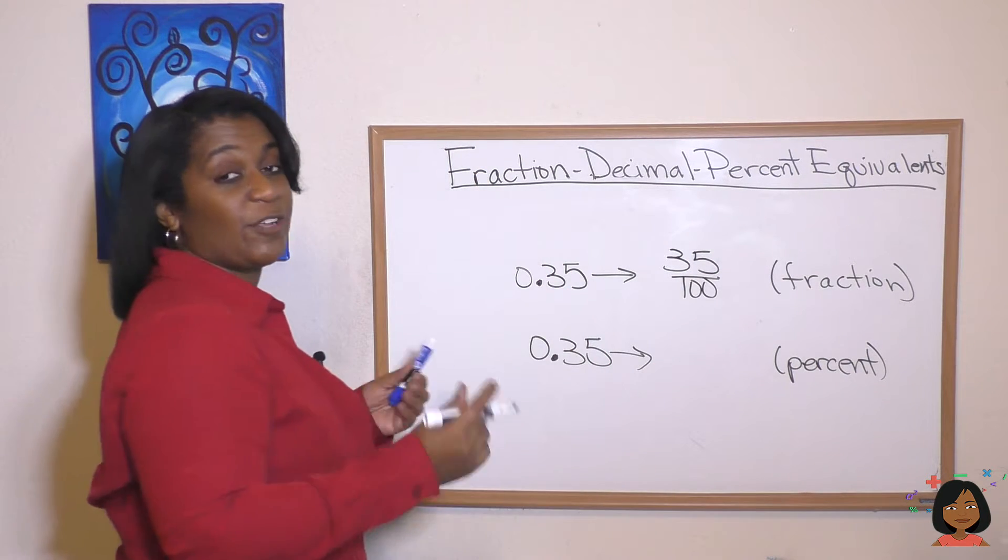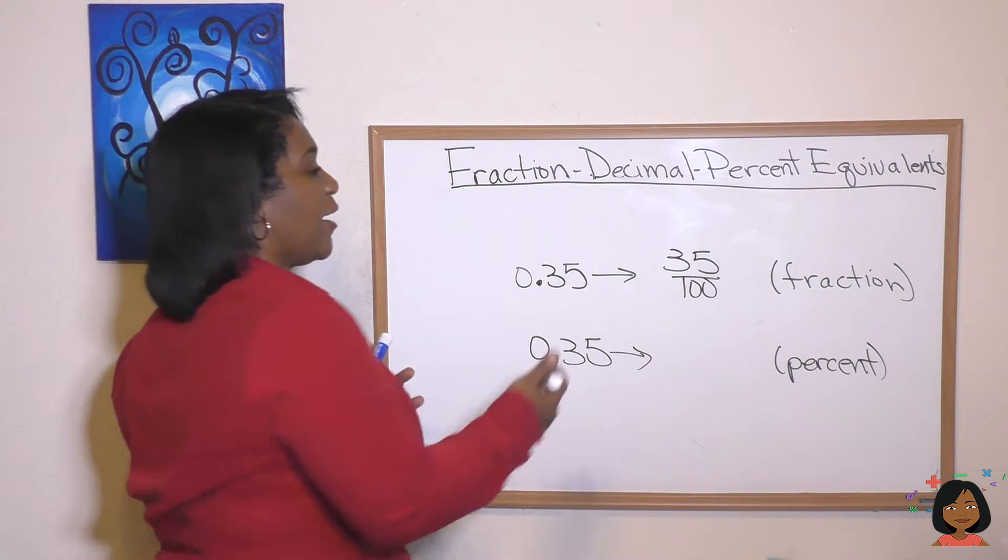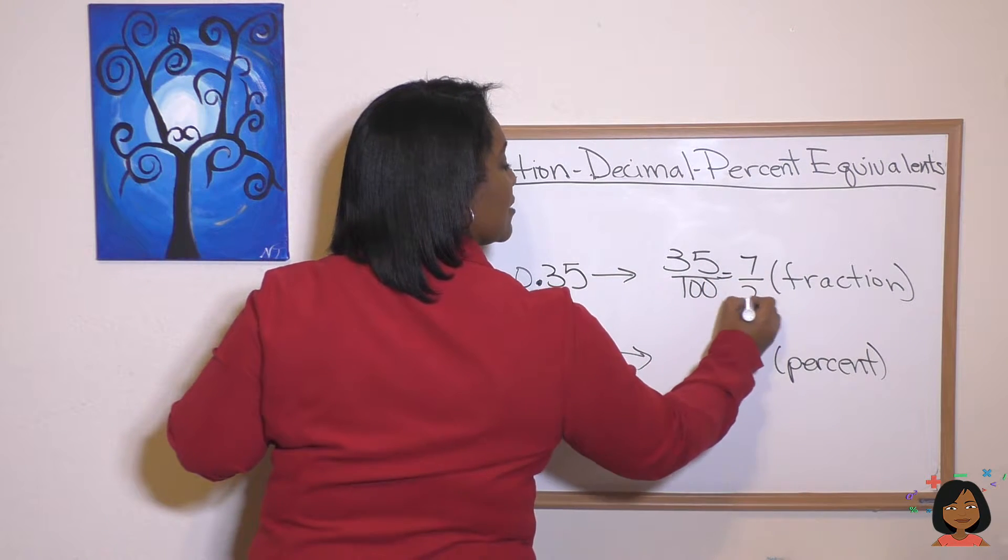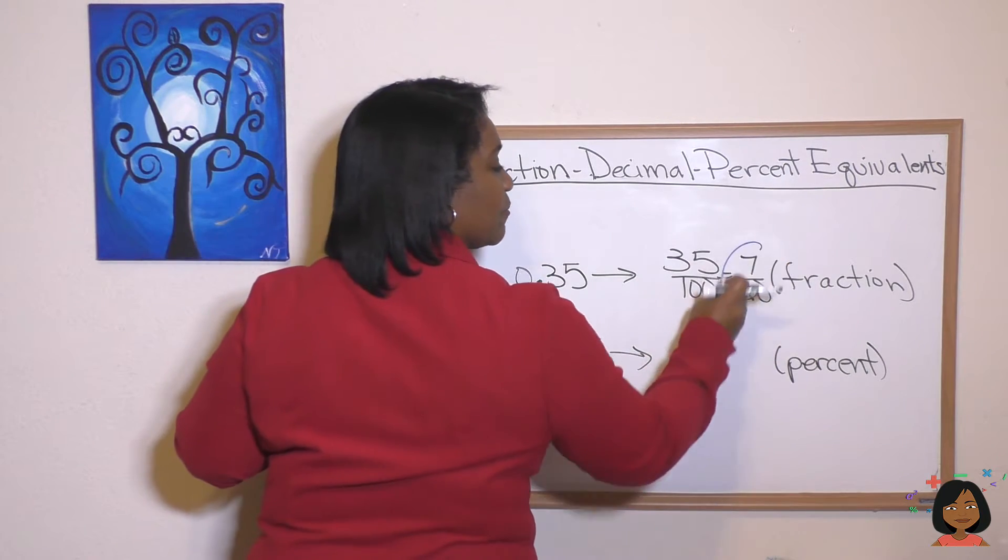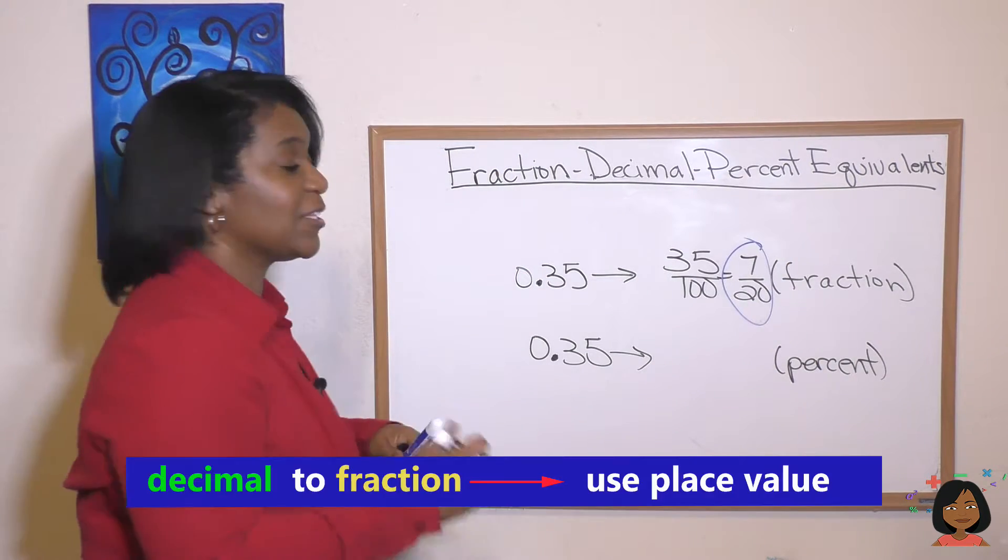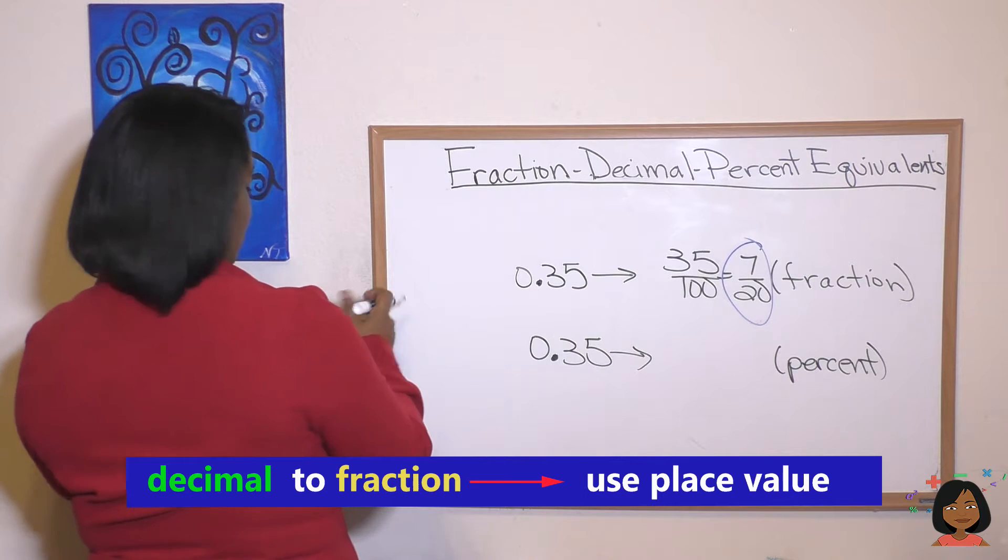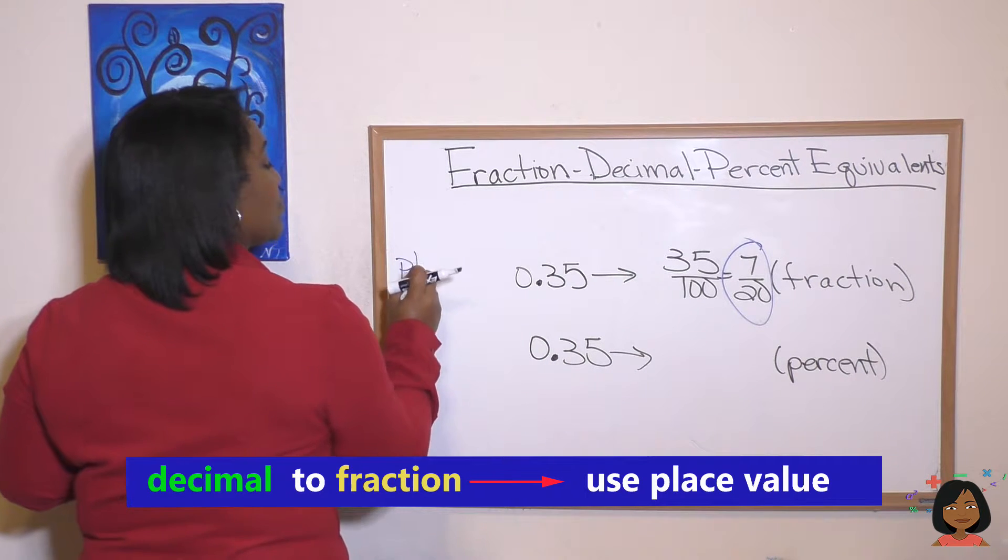Now we know 35 over 100 can be simplified. So let's do that. Seven-twentieths will be your simplified fraction. So all we did is we looked at the place value of the last digit and that helped us write our fraction.